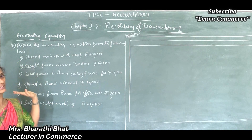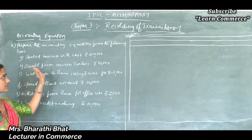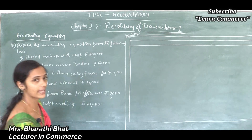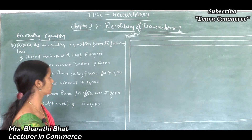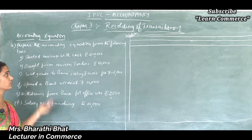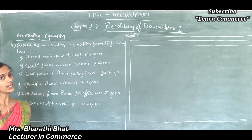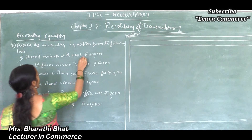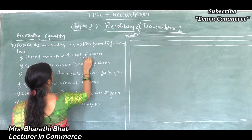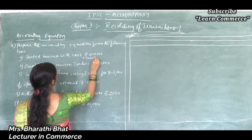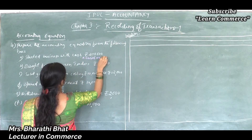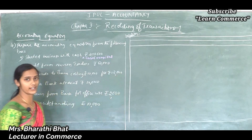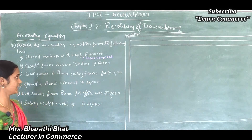First one: always started business with cash. Very simple — we can easily find out the two accounts which are involved in this particular transaction. Cash and capital are the two accounts affected here.